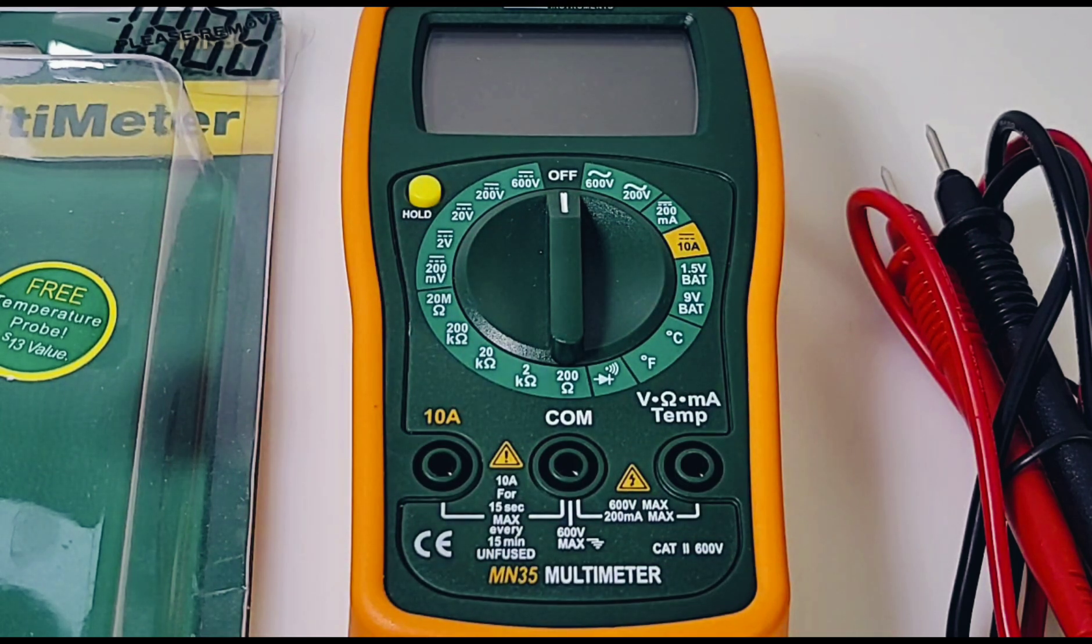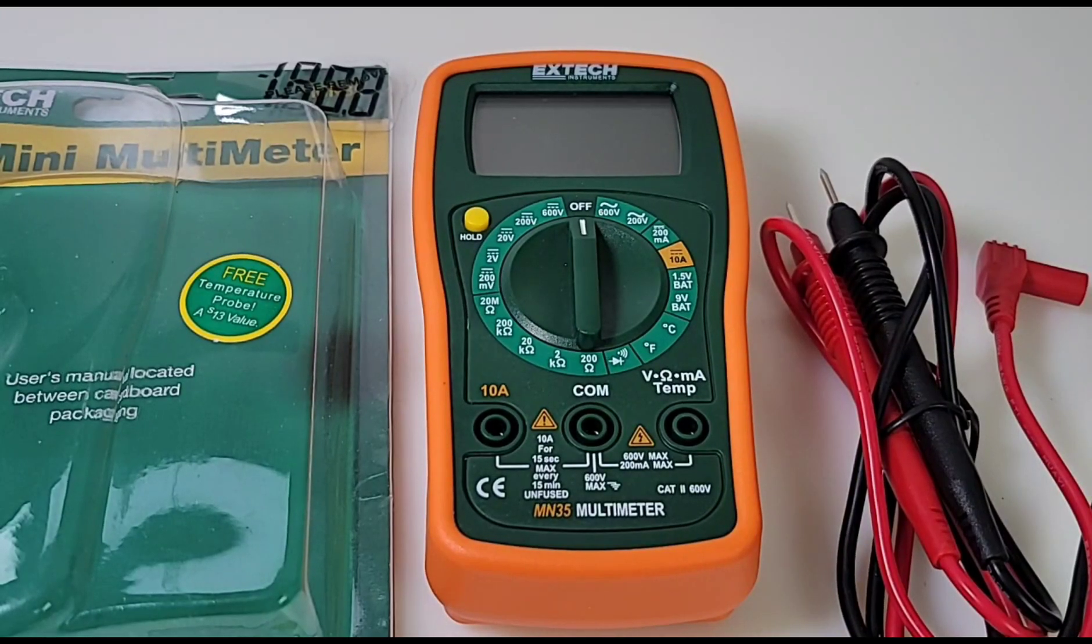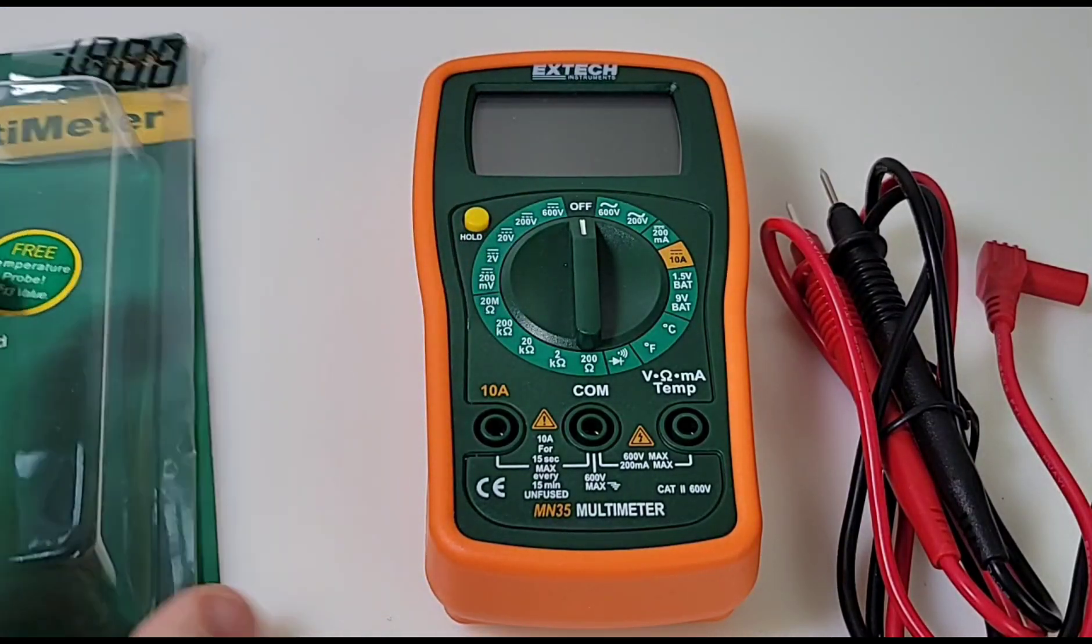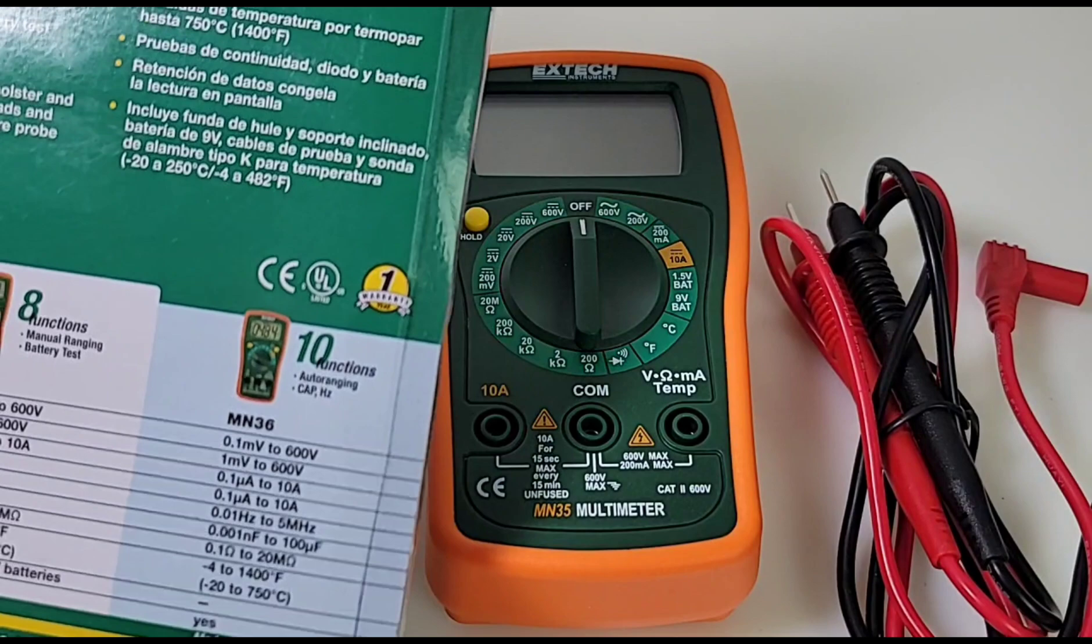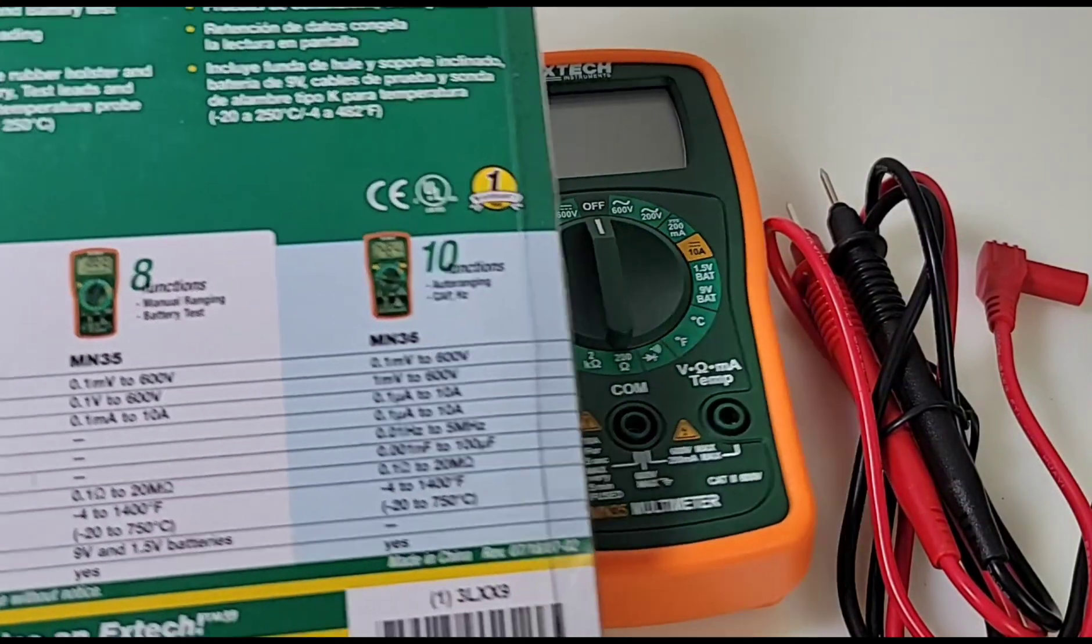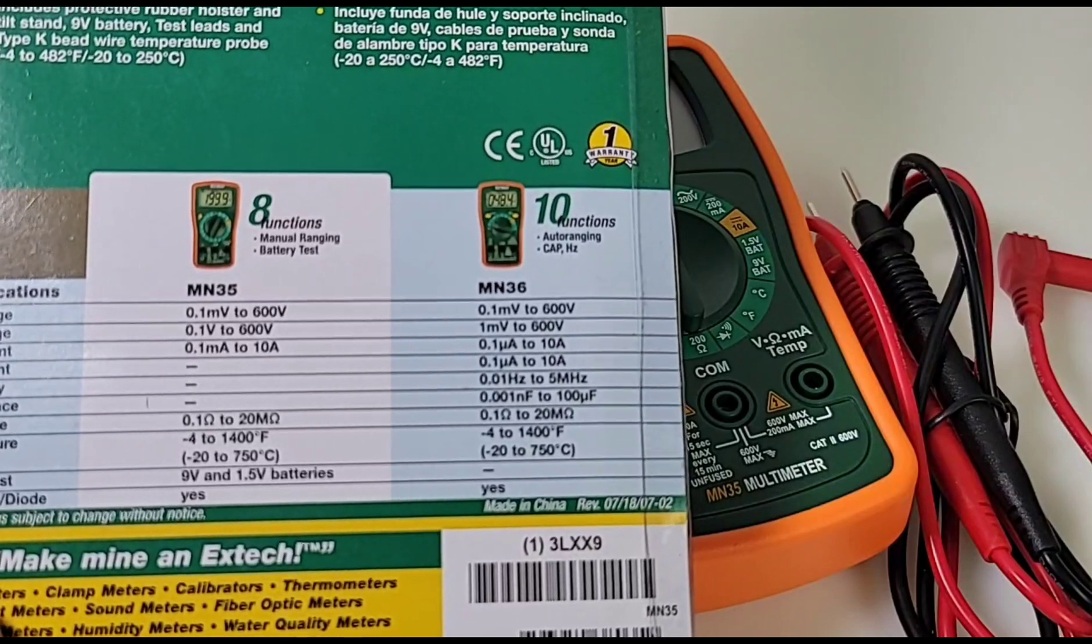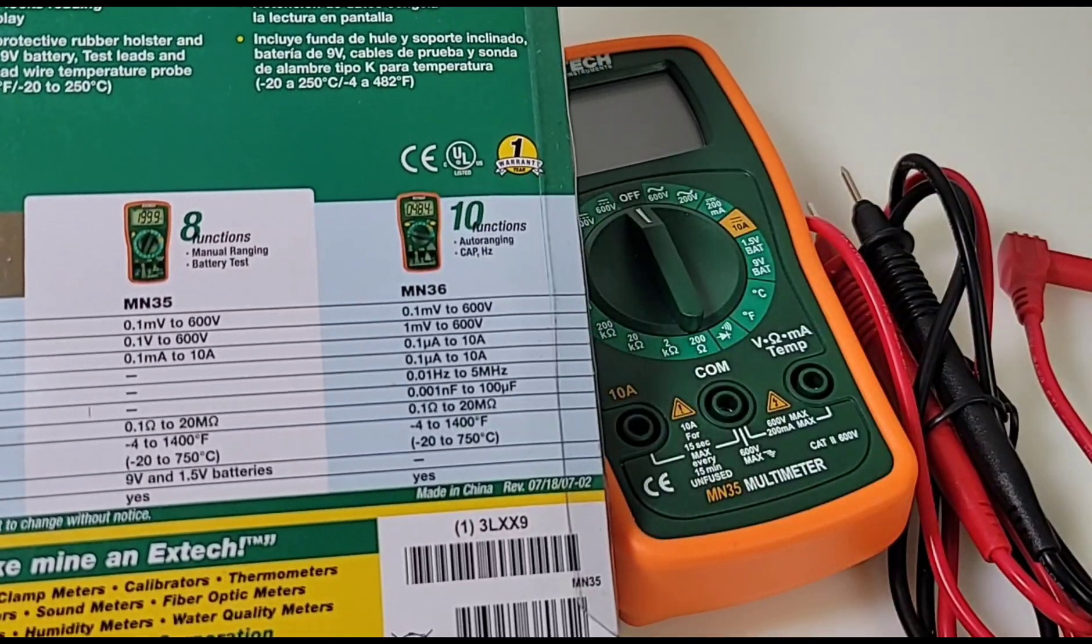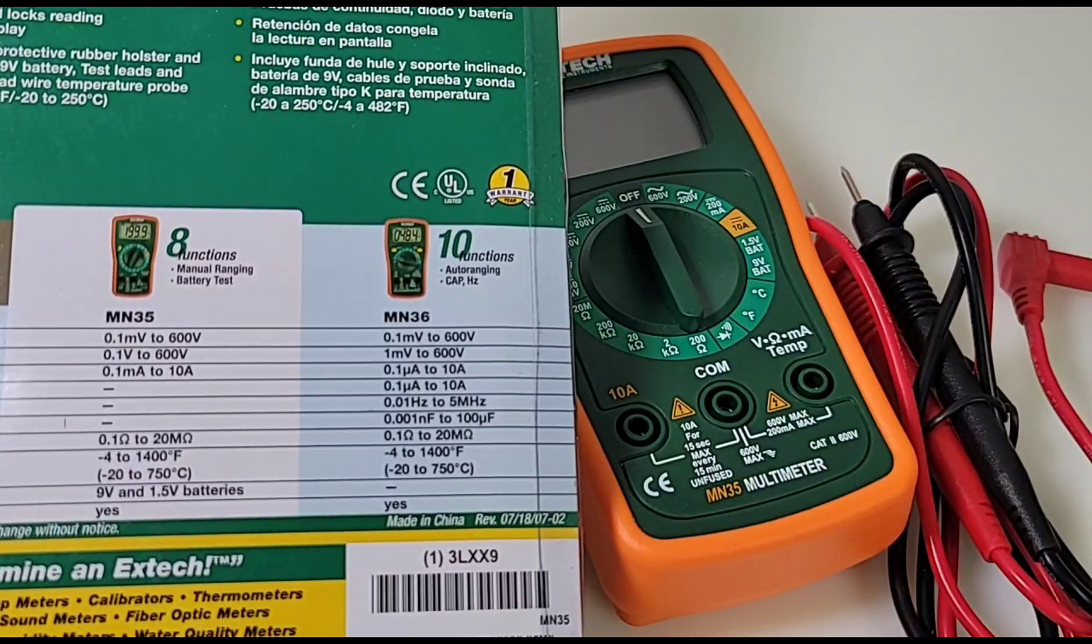The MN35, cheapo non-auto-ranging multimeter. Today in the cheapo realm, first things first: it does not ship in a box, just this plastic little bubble wrap. Tells us basically what the meter is. Two incarnations in the MN30 series - we have the MN35 and the 36. Now the 36 is auto-ranging, could not get one in time for this review, so we are stuck with the little manual ranging MN35.